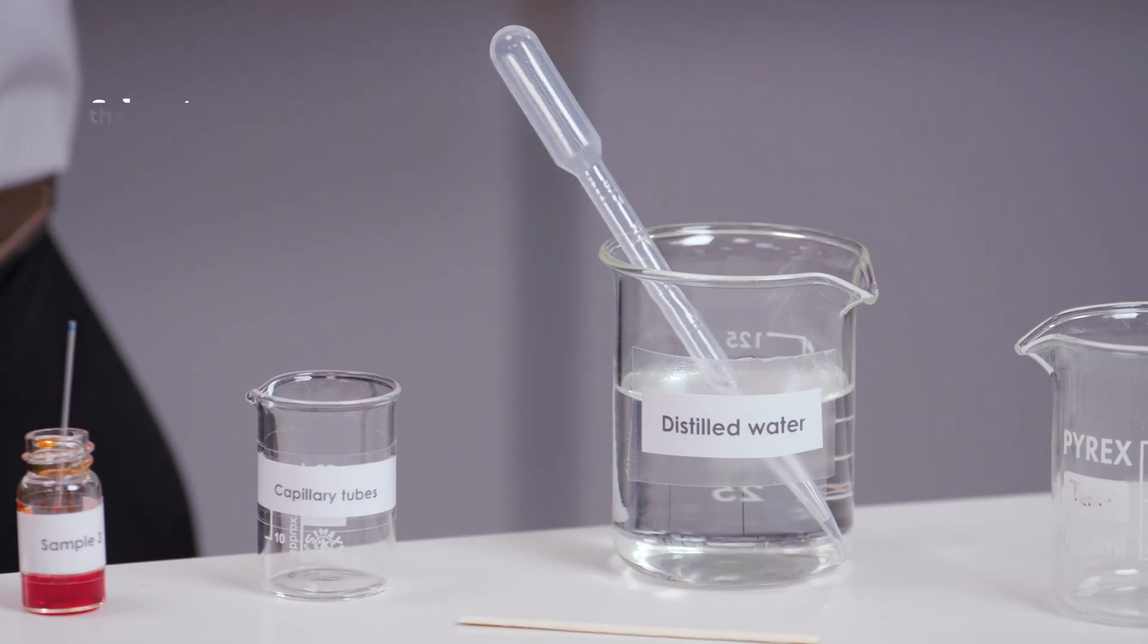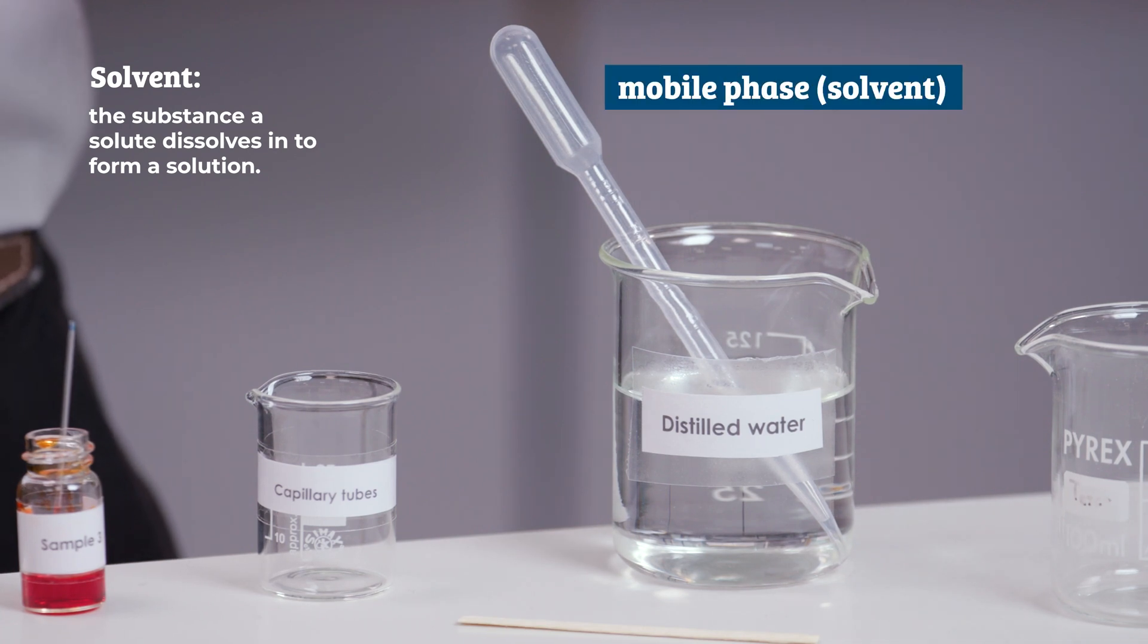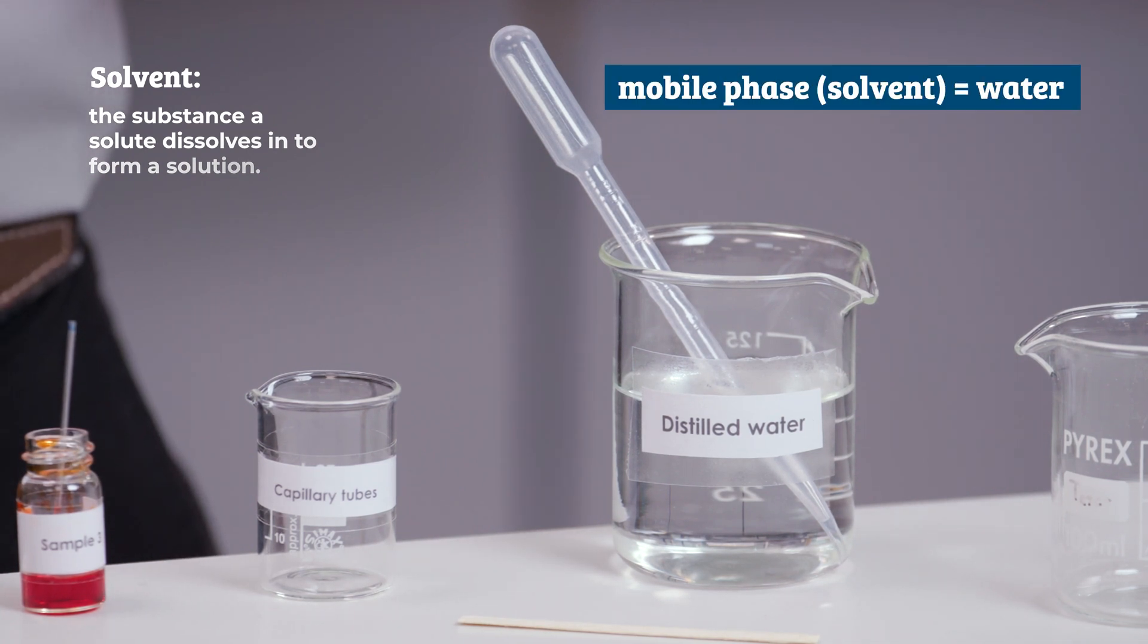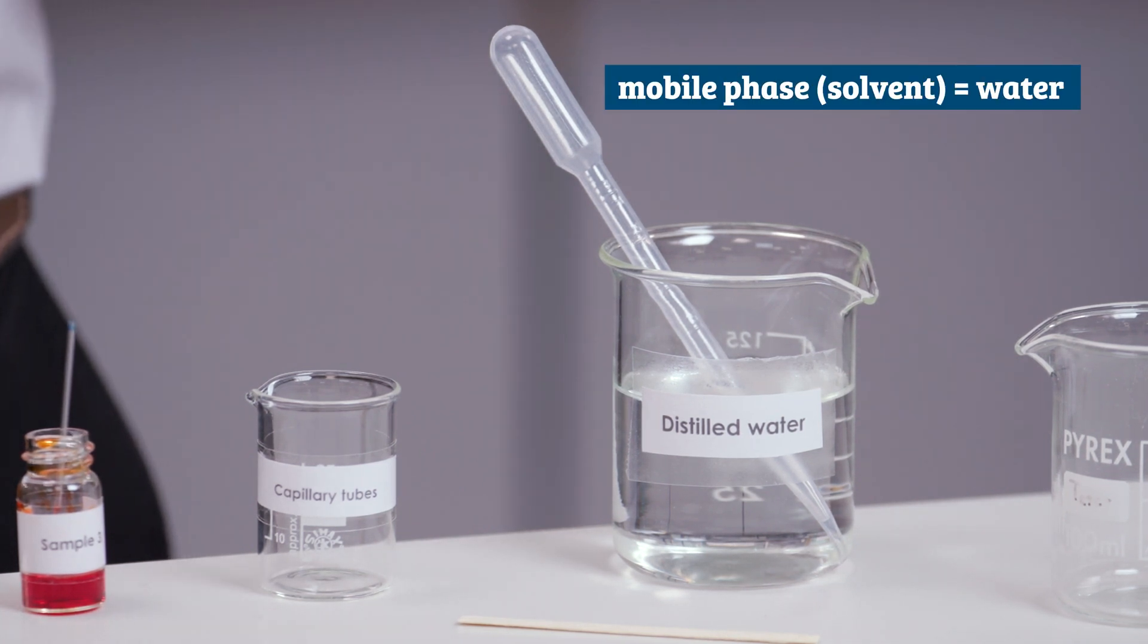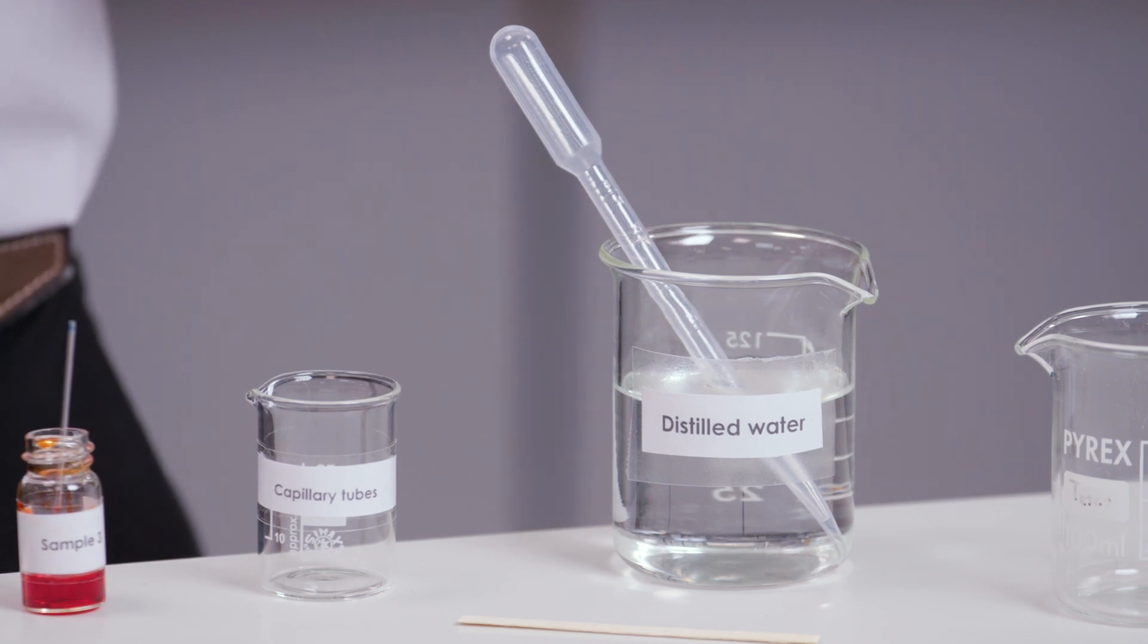I'm using water as the solvent. We call the solvent the mobile phase because it moves. If an ink is soluble in water, paper chromatography will separate all the substances, the different colours, in it.